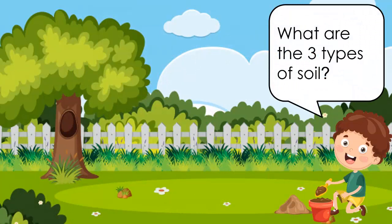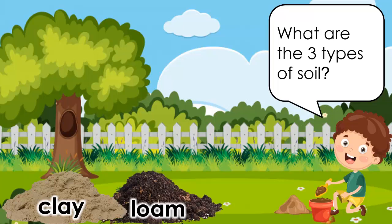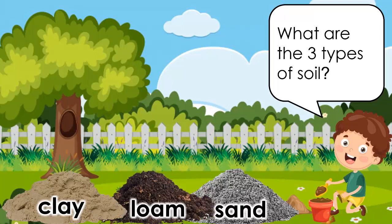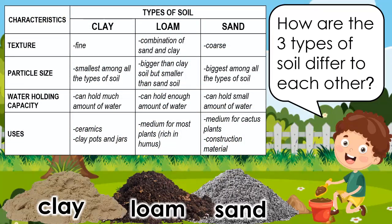What are the 3 types of soil? The 3 types of soil are clay, loam, and sand. How are the 3 types of soil different from each other? The 3 types of soil differ from each other in terms of texture, particle size, water holding capacity, and uses.